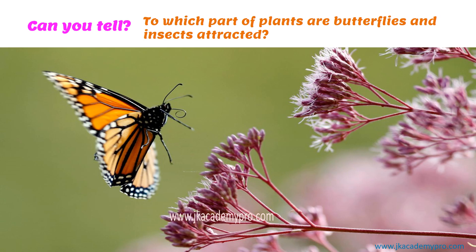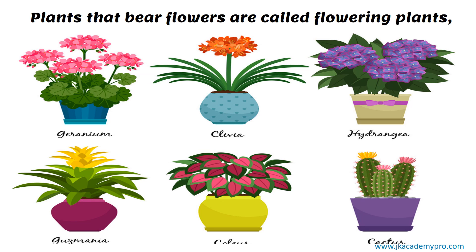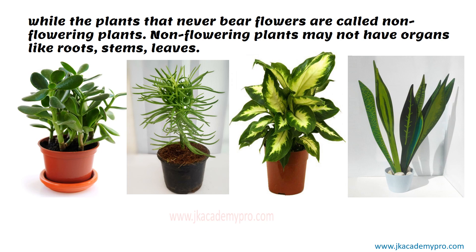Can you tell which part of plants butterflies and other insects are attracted to? Look at the picture carefully. They get attracted to the different flowers. Flowers are of various colours, shapes, sizes and fragrances, so insects get attracted to them. Plants that produce flowers are called flowering plants, while plants that never bear flowers are called non-flowering plants. Non-flowering plants may not have organs like roots, stems and leaves — some may lack leaves, some may lack stems, and some may lack roots as well.